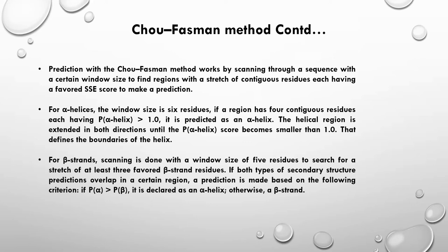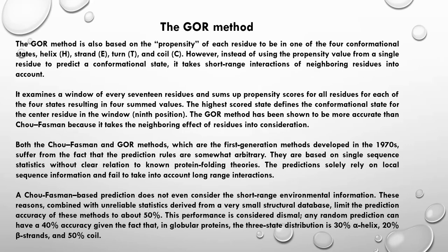Sometimes for a certain region the prediction could be either alpha helix or beta strand — a tie. In that case, the final prediction is made based on whichever type has the higher sum of propensity values: the one with the higher sum is declared alpha helix or beta strand accordingly.